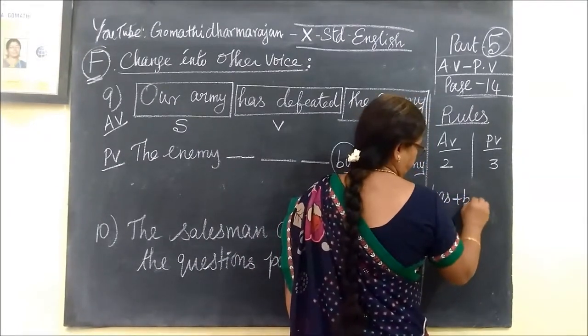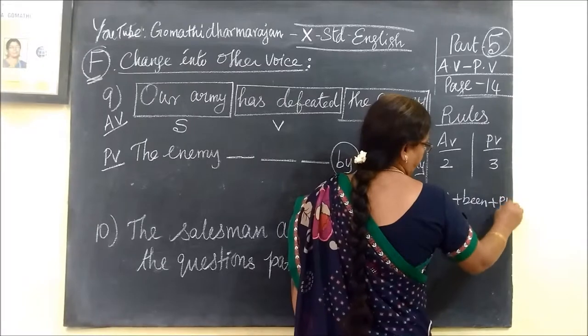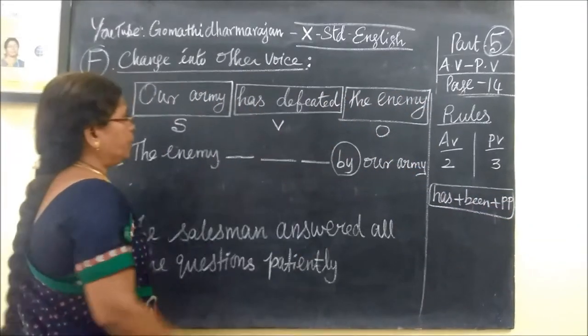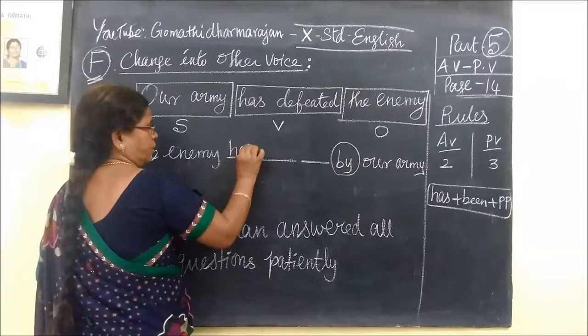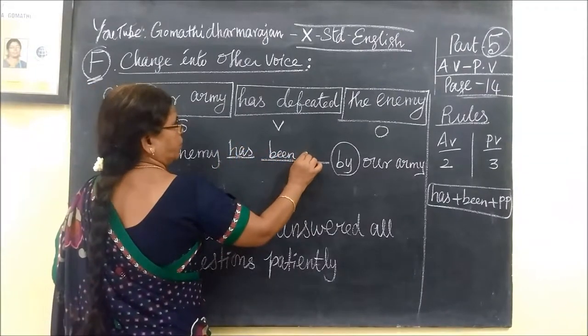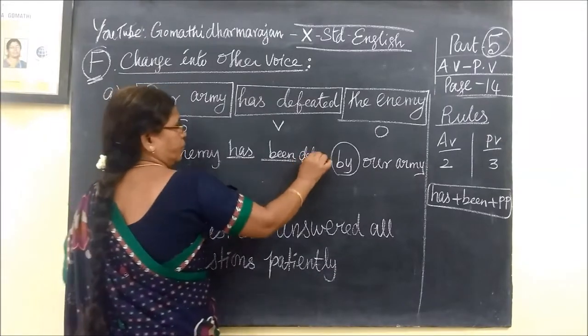Has plus been plus third form. This is a structure. Has, then be, then third form defeated. This is a structure.